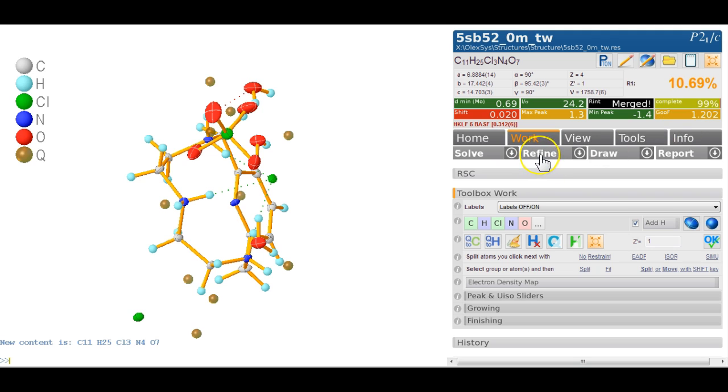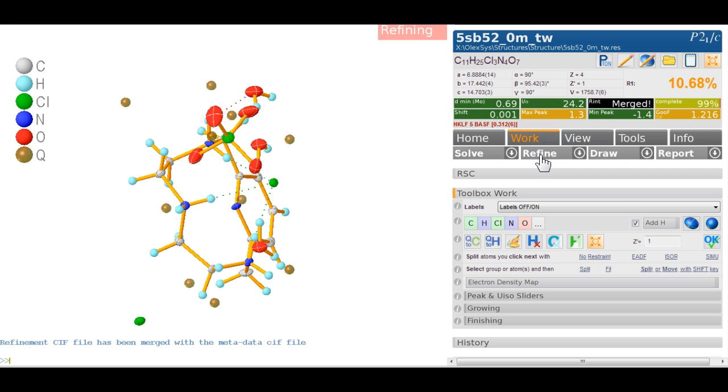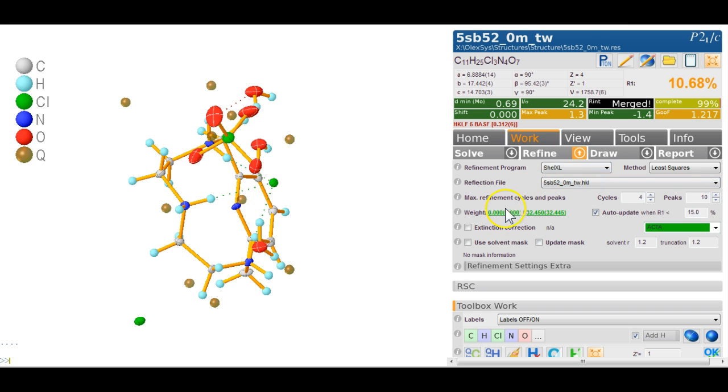If I refine this again, then we are looking good. R factor is about 11%. Nothing moves, nothing shifts. Let's have a quick look at here. The weighting scheme is settled. Let's just have a look at the extinction. This is of course not going to really work with twin data, but let's have a look with it. It makes no difference. It's 17 with an ESD of 17, so that's meaningless. We get rid of that again.